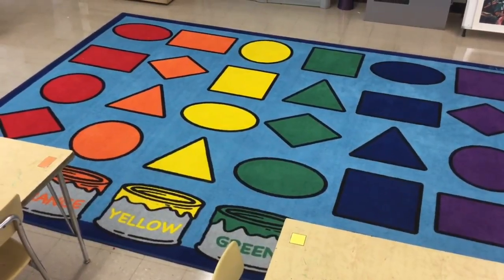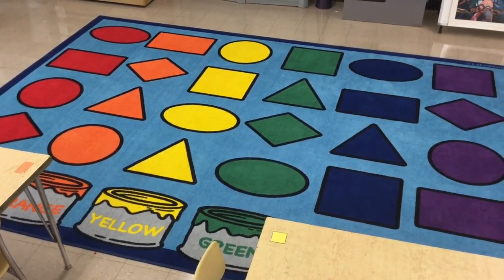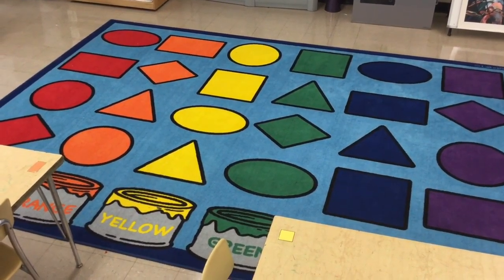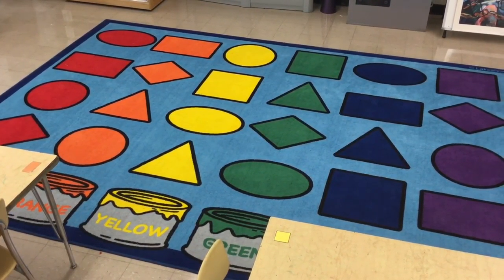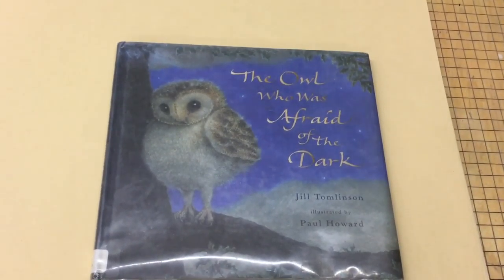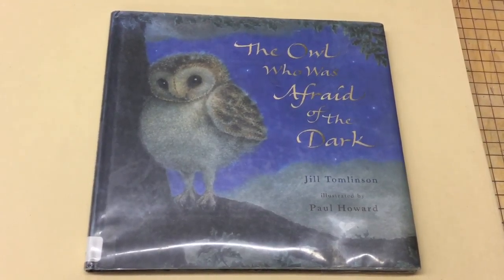Follow the directions for washing your hands and then head back to the rug. Once you've put all your tools back in the cup on the tray and you've washed your hands and dried them off, come back and please have a seat on your shape on the rug for a story. Today, we will be listening to The Owl Who Was Afraid of the Dark by Jill Tomlinson.